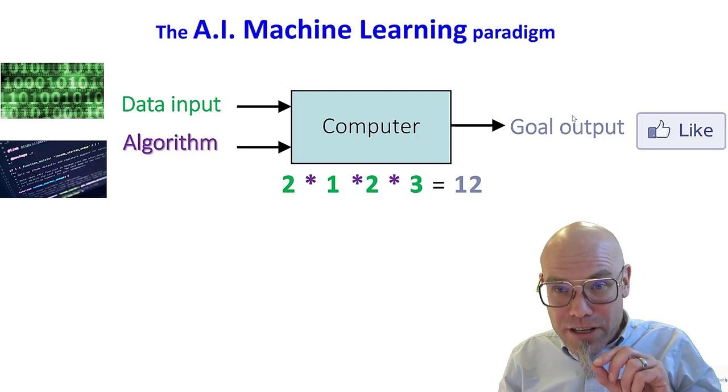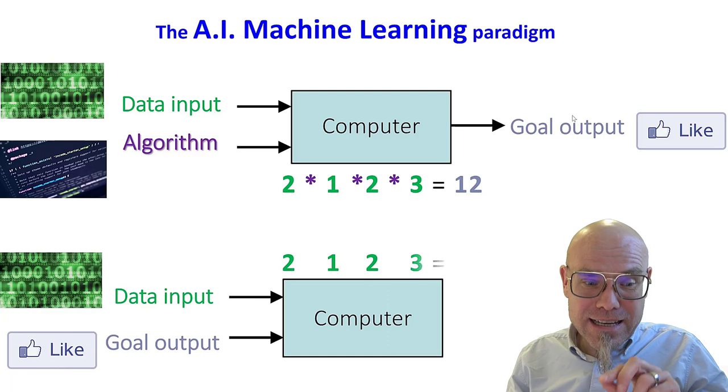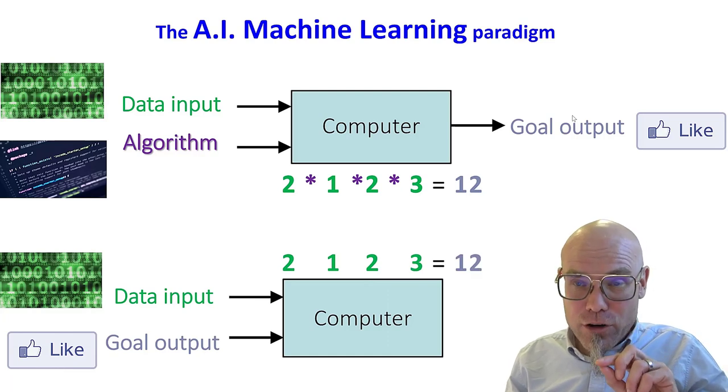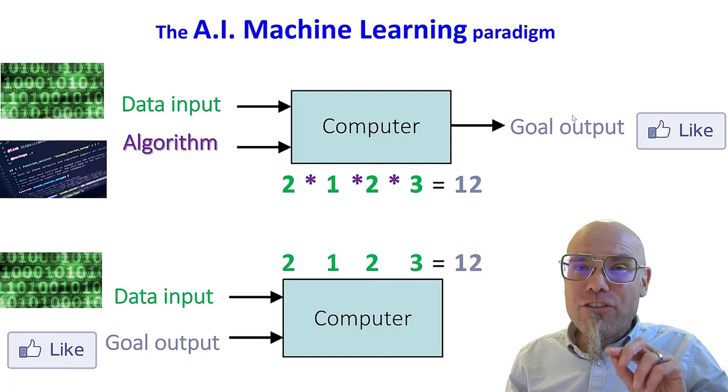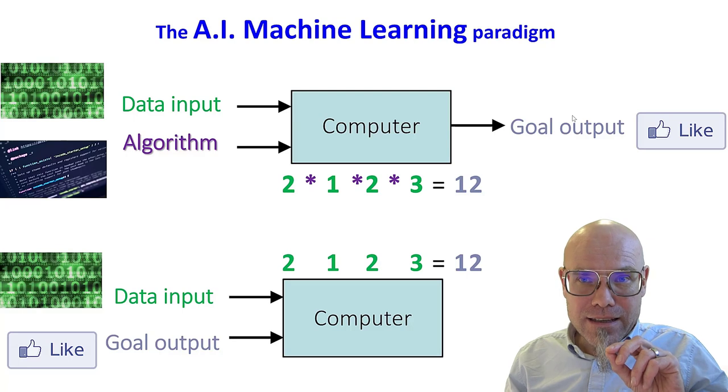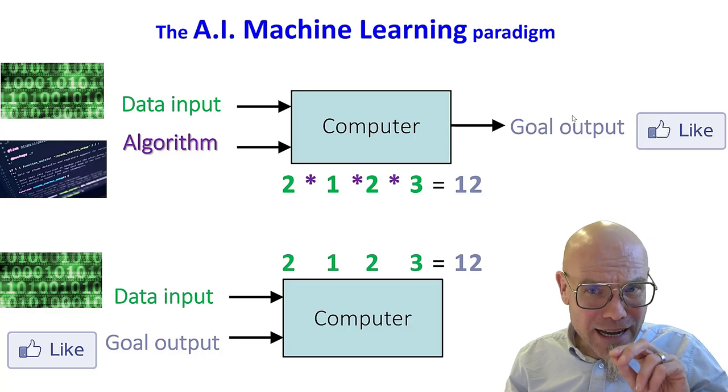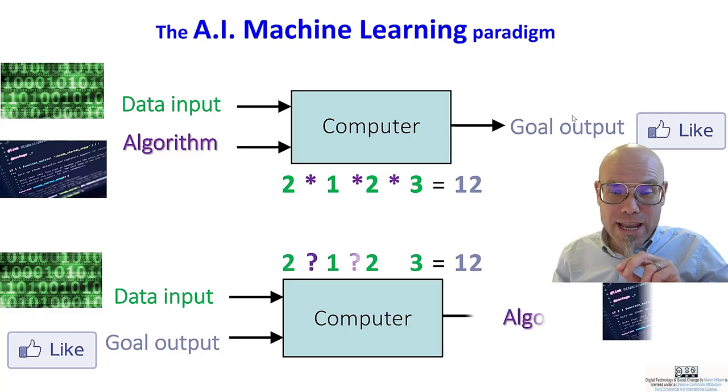Now, what the machine learning paradigm did, it turned it on its head. It said, here's the data, and here's the output. Now, find me the best way of how I can combine the data in order to create the output.